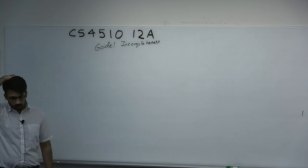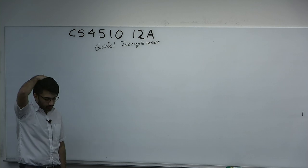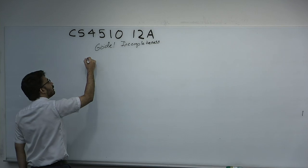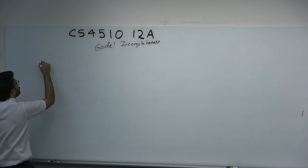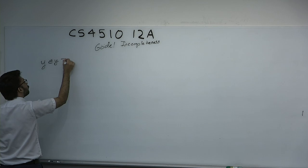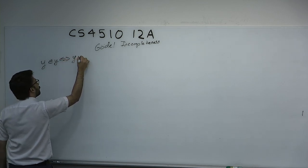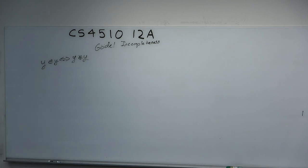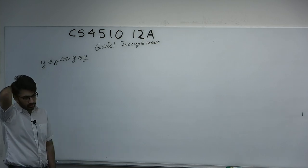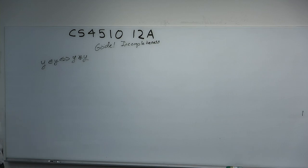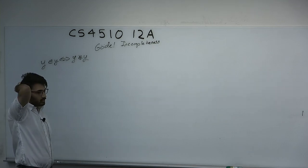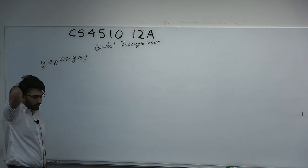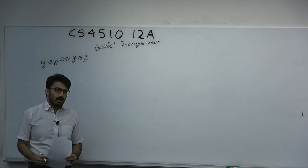Last time we talked about Russell's paradox. Bertrand Russell used the axiom of unrestricted comprehension to derive an inconsistency in Frege's system. You could prove that y was in y if and only if y was not in y.